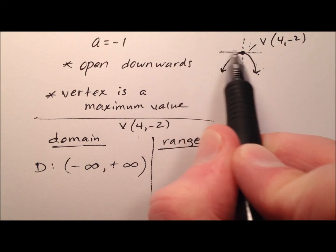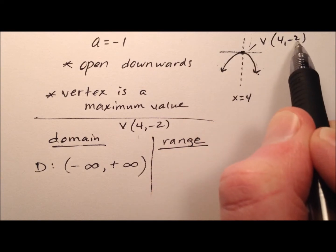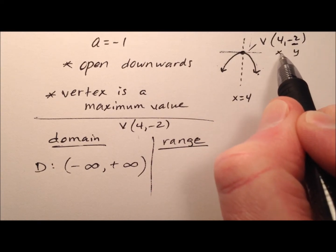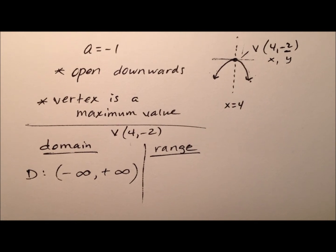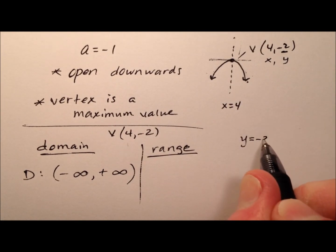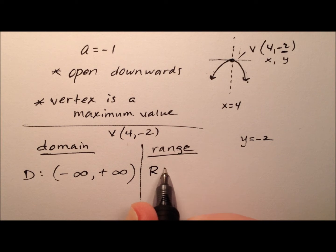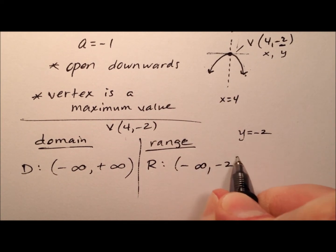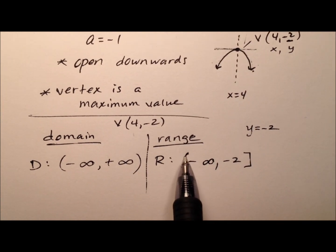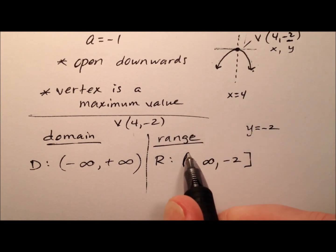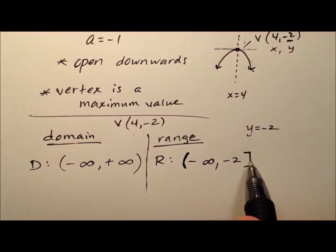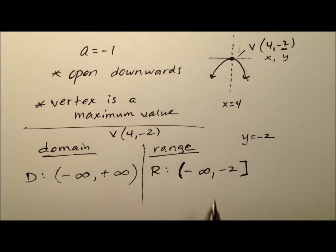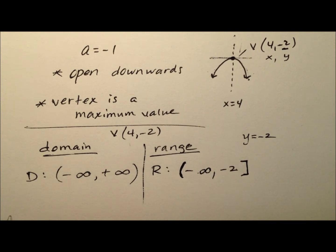Since the parabola opens down, the y values will be going down to infinity, but we do have a maximum y value — this y value of negative 2. So the maximum value is y equals negative 2, and we can write our range as negative infinity up to negative 2. The infinities always get parentheses, but this negative 2 is included — it's the y value of the vertex — so the range goes from negative infinity to negative 2, with negative 2 included.